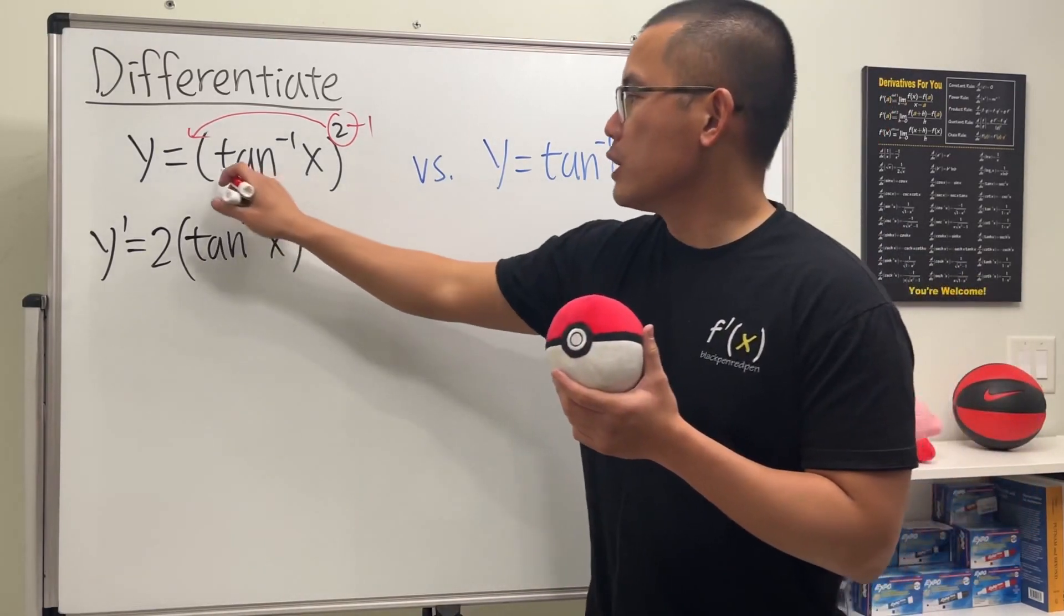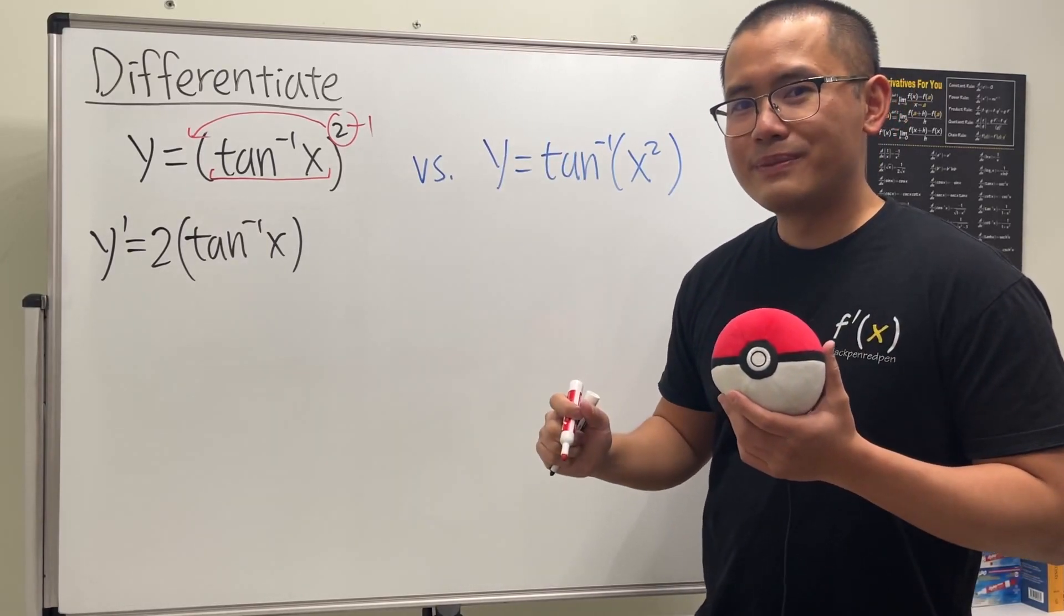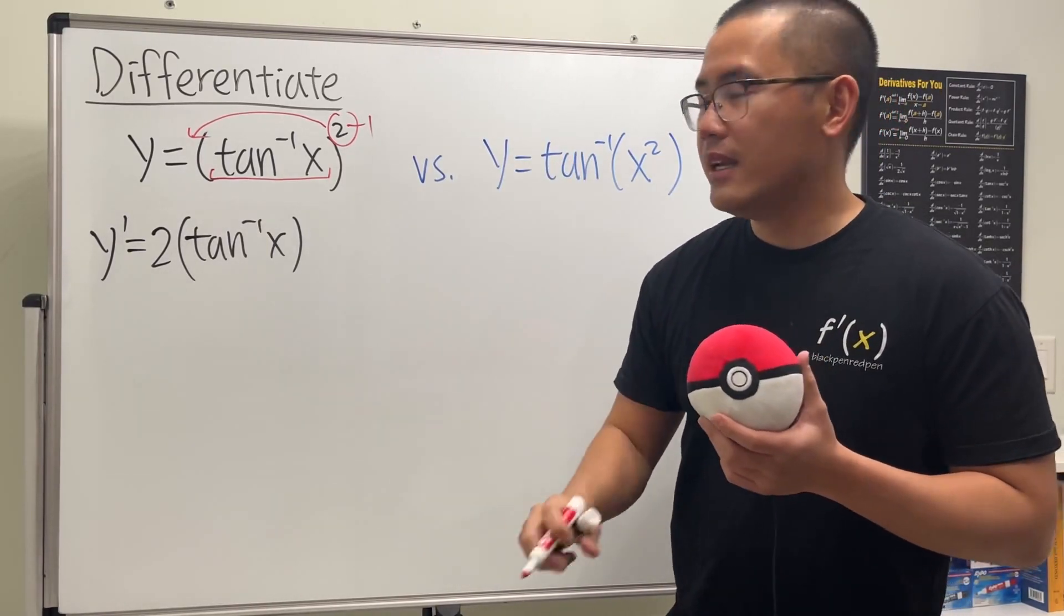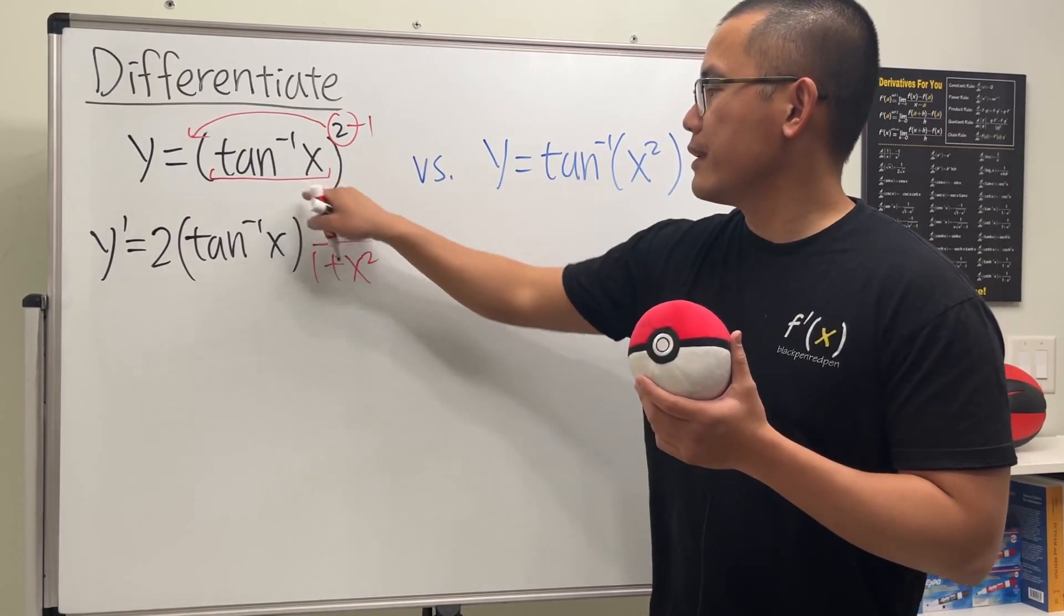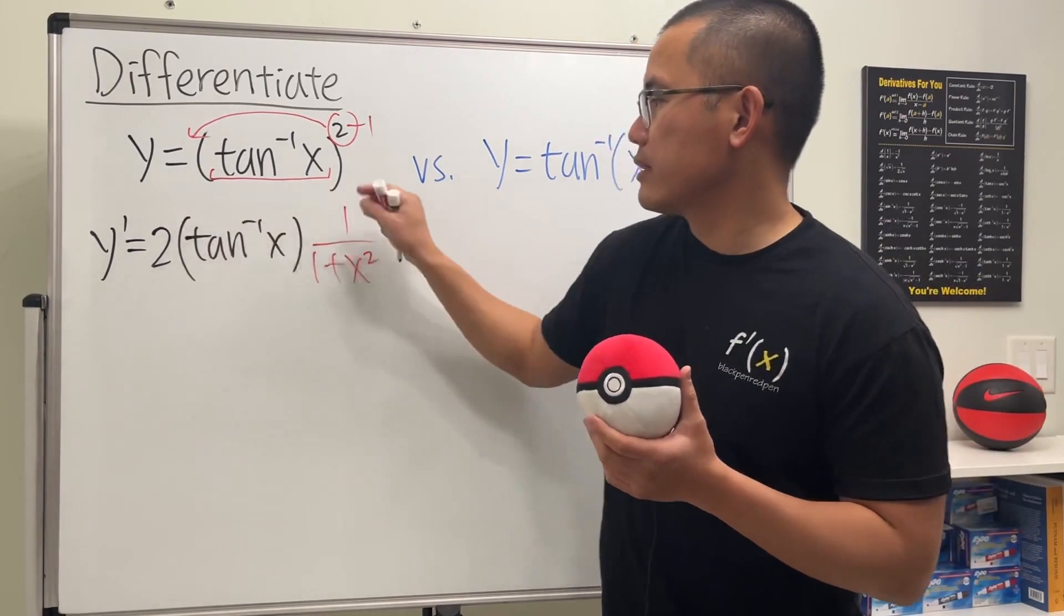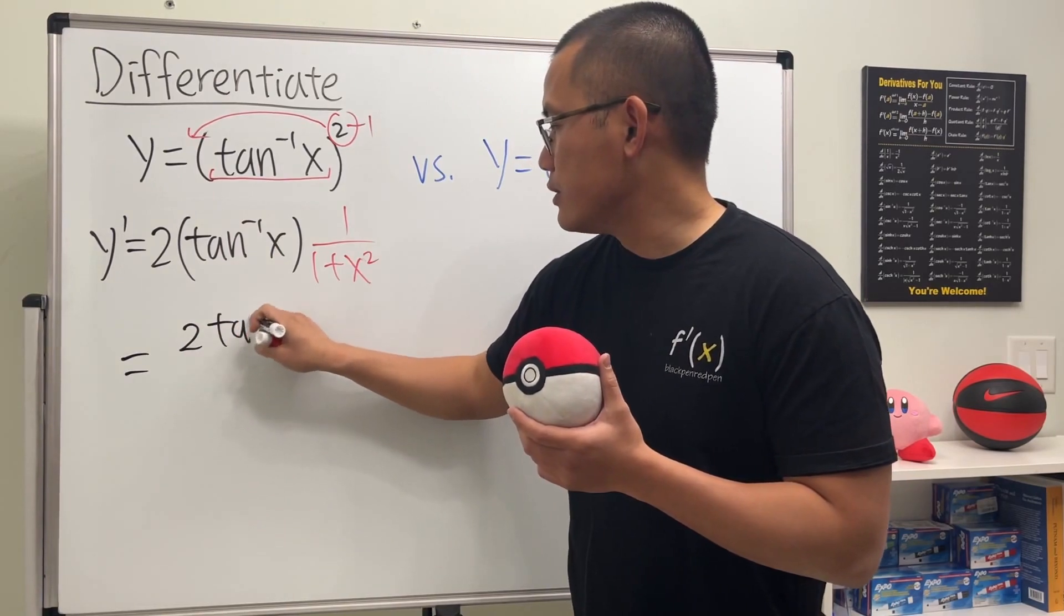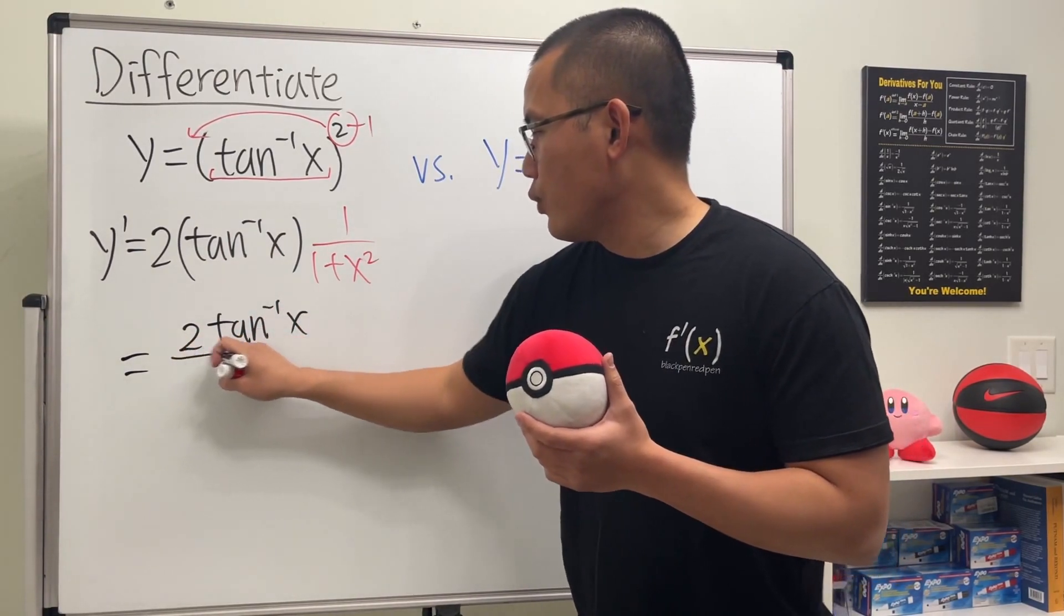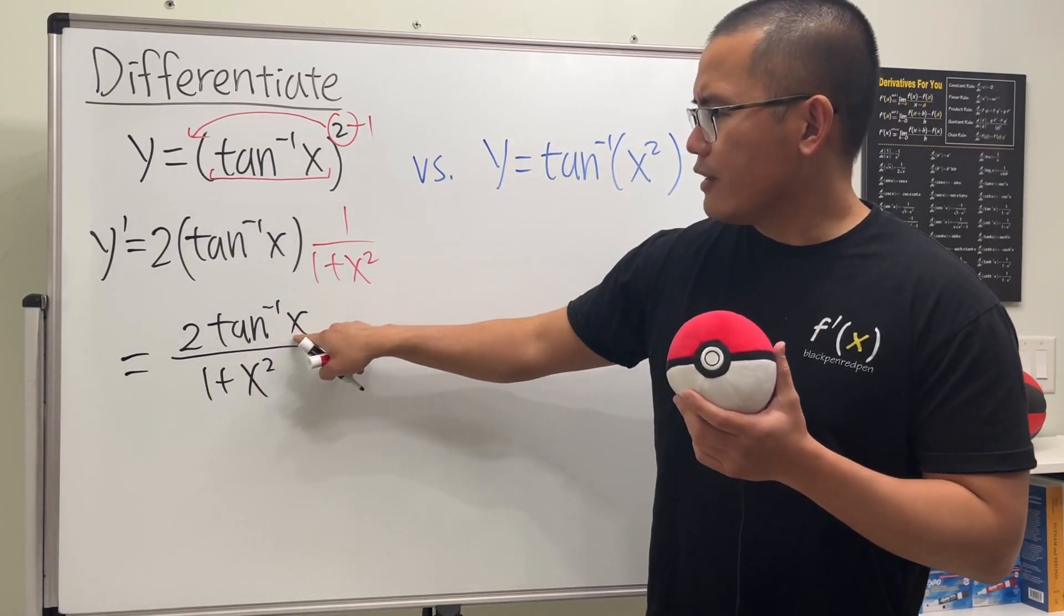And then we use the chain rule - multiply by the derivative inside. What's the derivative of inverse tangent of x? Well, you have to remember that, and the answer is one over one plus x squared. That's pretty much it, and perhaps I will just put this on the top for the final result. So we get two times the inverse tangent of x over one plus x squared, like that.